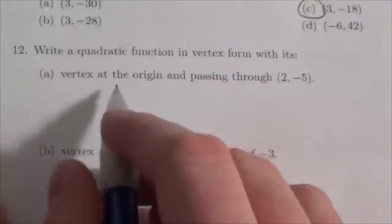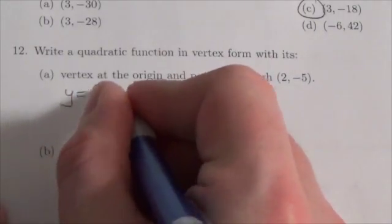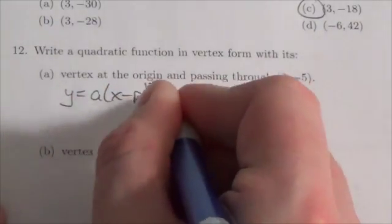First, we've got the vertex at the origin and passing through (2, -5). So y equals a(x - p)² + q.